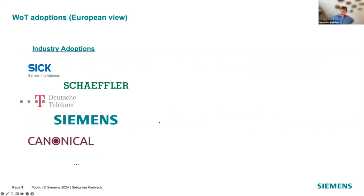I was also asked to give an overview of who is already using this technology, with a focus on Europe. There are many more companies using it, but I'm confident about those who have given presentations or told us directly. For example, SICK AG does sensor devices; Schaeffler is active in automotive parts; Deutsche Telekom has smart home equipment relying on Web of Things; Siemens has products built on Web of Things; and Canonical, a British company, works on Linux-based systems.